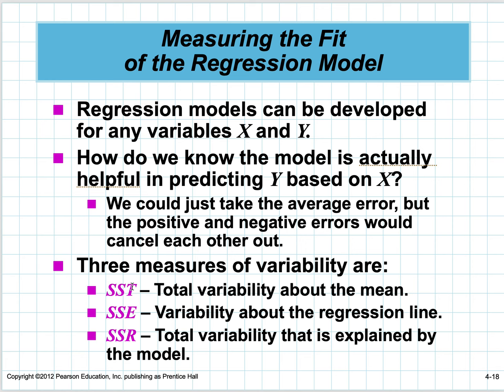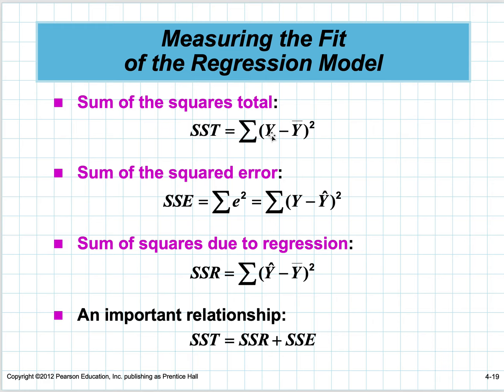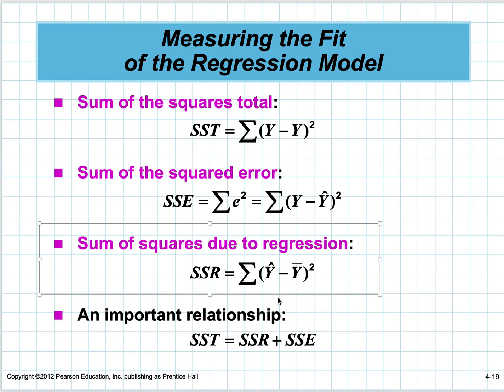The sum of squared total is (y minus y-bar) squared—these are all like variances; if we divided by n, this would be the variance of y. The sum of squared error uses the predicted value: (y minus y-hat) squared, summed up. Then we have the sum of squares due to regression: (y-hat minus y-bar) squared.